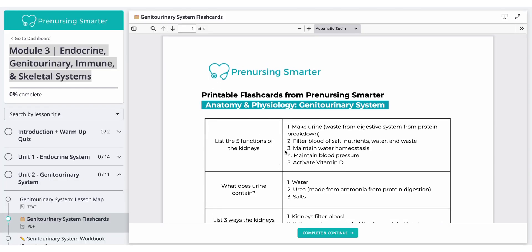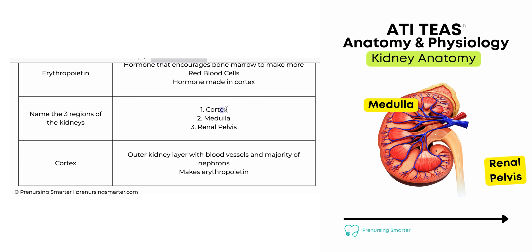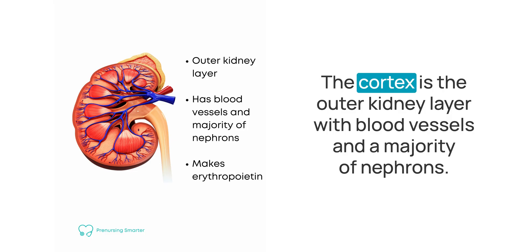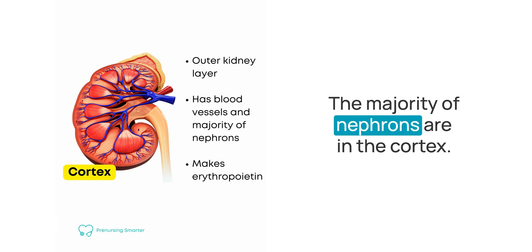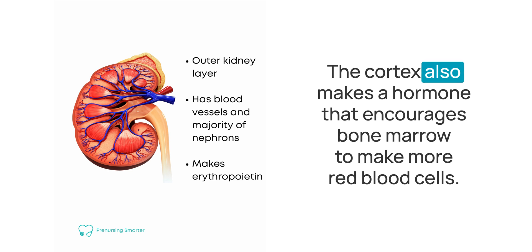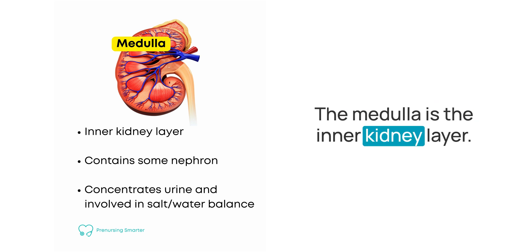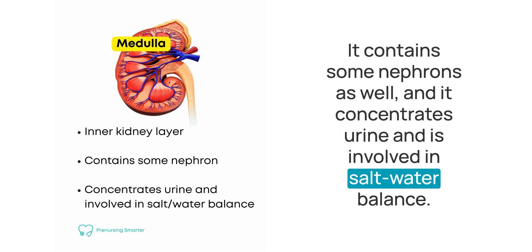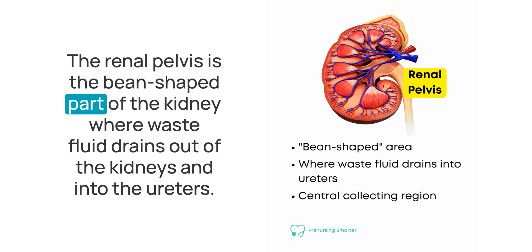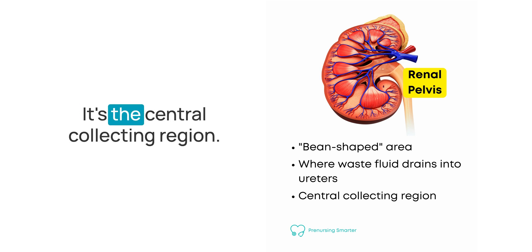Now let's take a look at some kidney anatomy. Name the three regions of the kidneys. One, the cortex. Two, the medulla. Three, the renal pelvis. The cortex is the outer kidney layer with blood vessels and a majority of nephrons. It also makes a hormone that encourages bone marrow to make more red blood cells. The medulla is the inner kidney layer; it contains some nephrons, concentrates urine, and is involved in salt-water balance. The renal pelvis is the bean-shaped part where waste fluid drains out of the kidneys and into the ureters — it's the central collecting region.